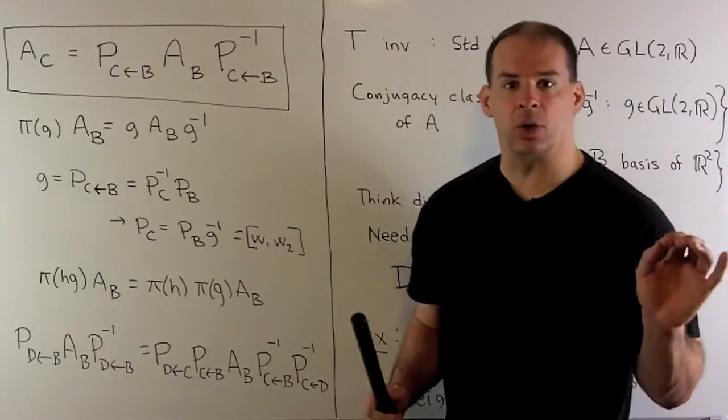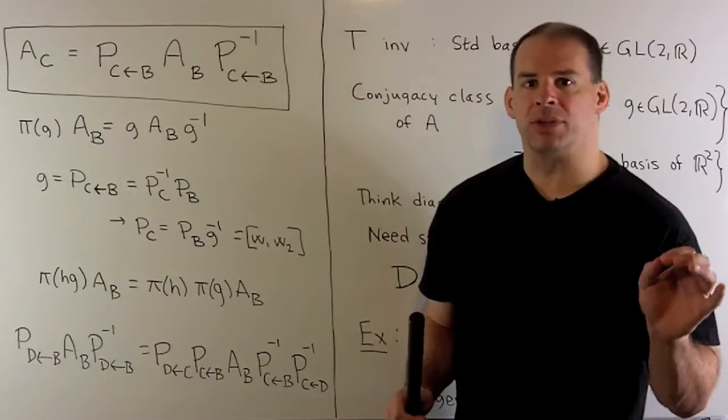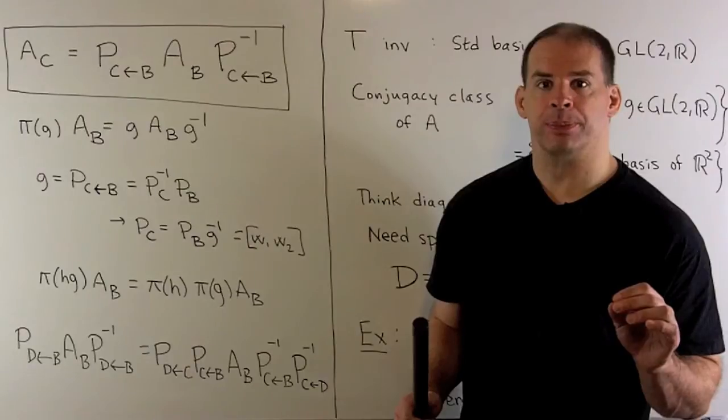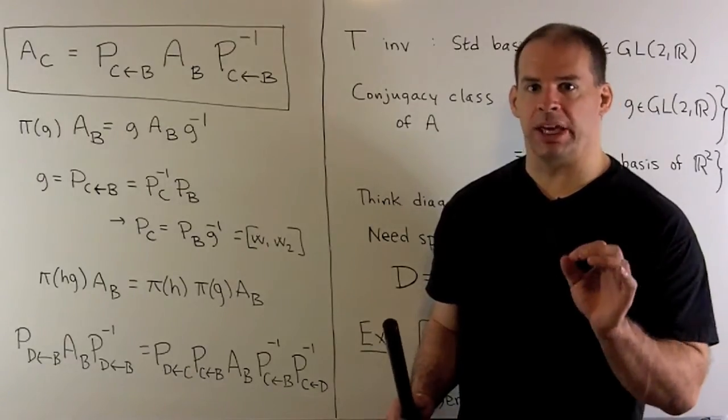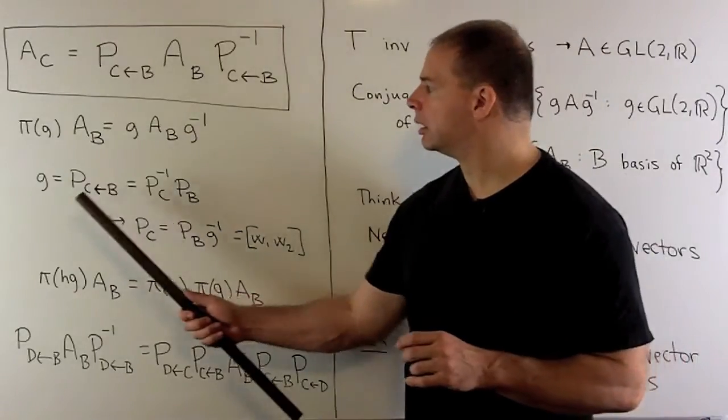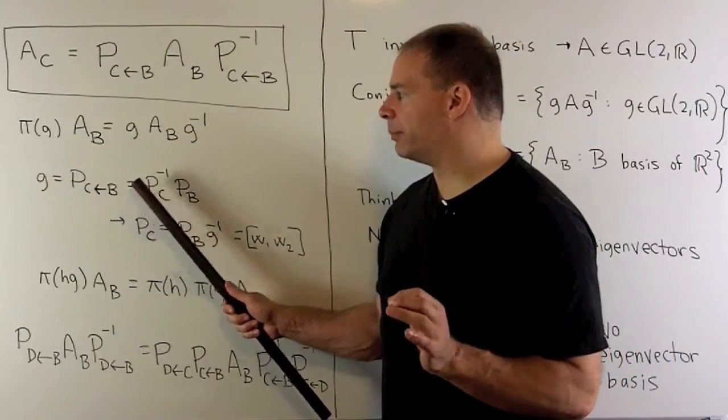So here we see the second group action come in. Now, what happens if we just conjugate with any G from our group? What's the change of basis? We know we're starting with basis B, so we want to figure out the target basis C.